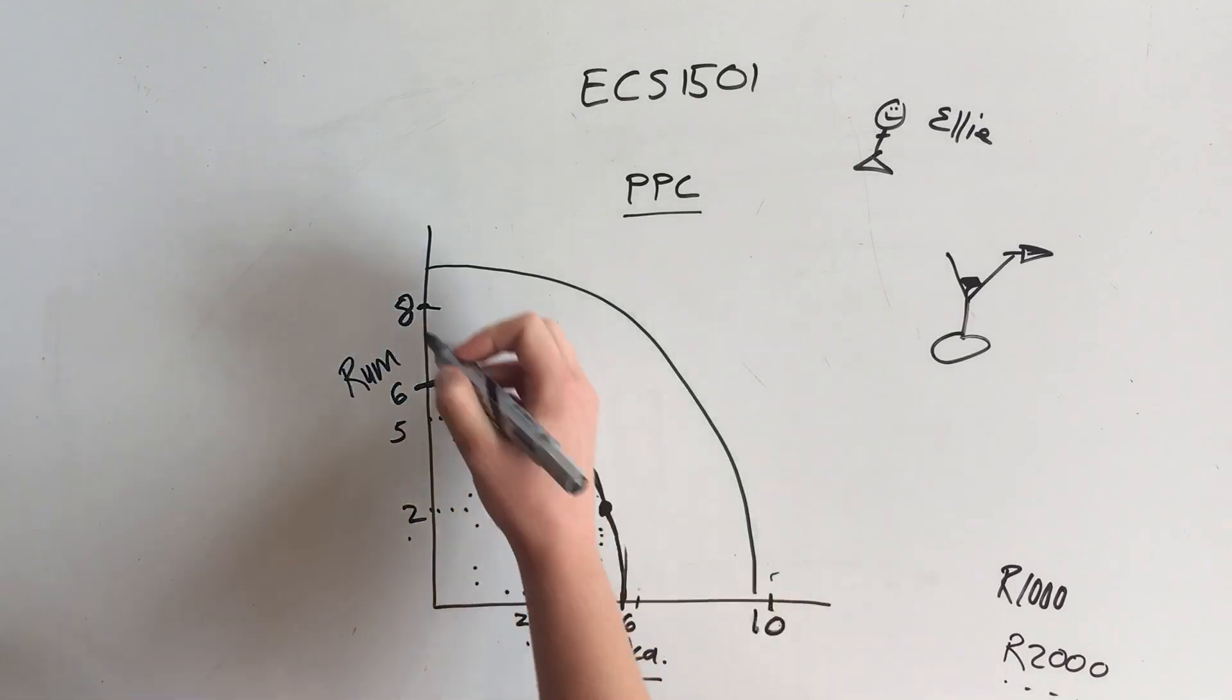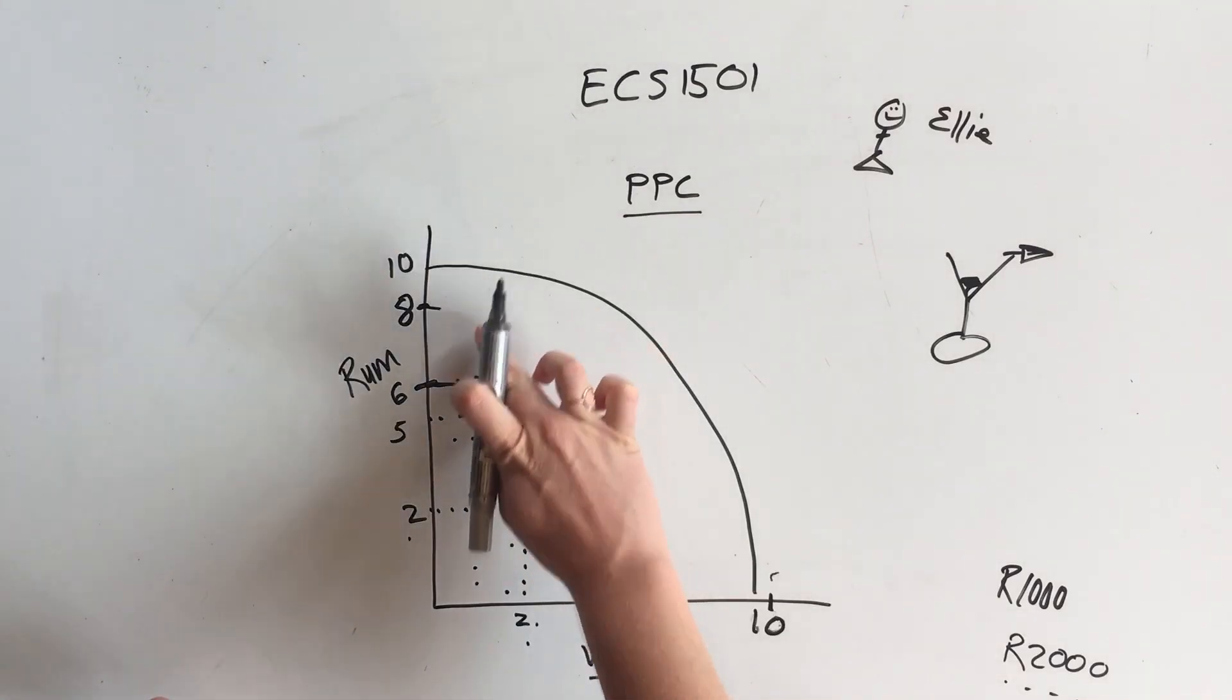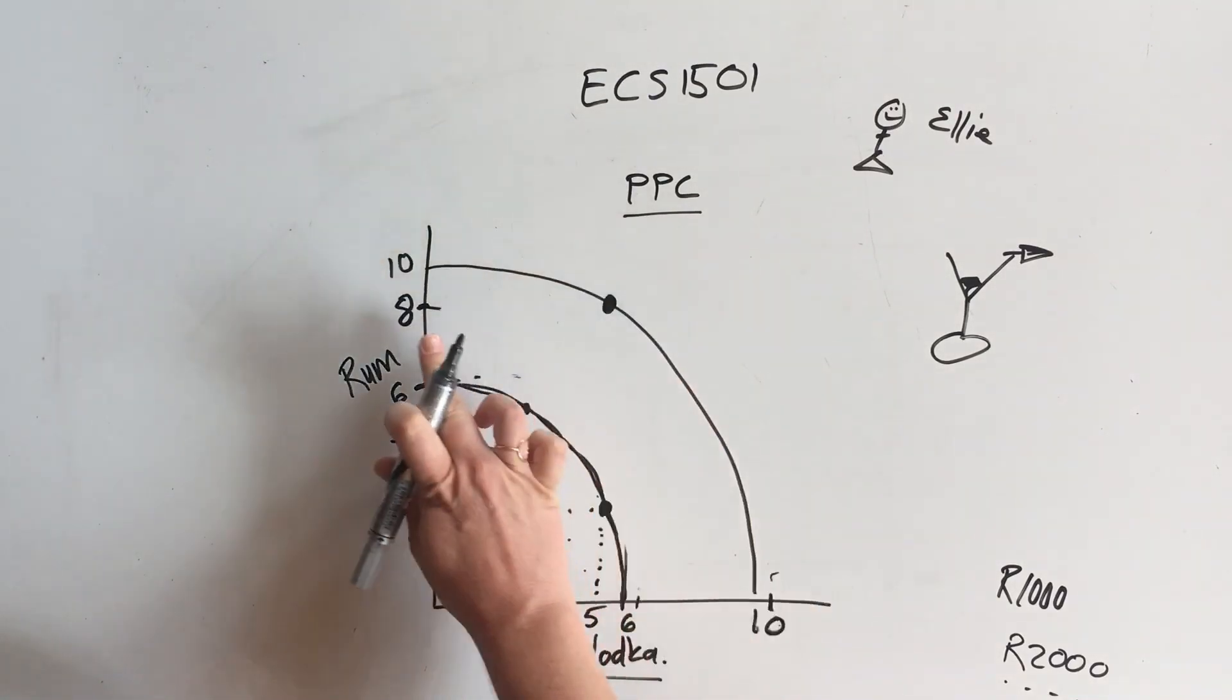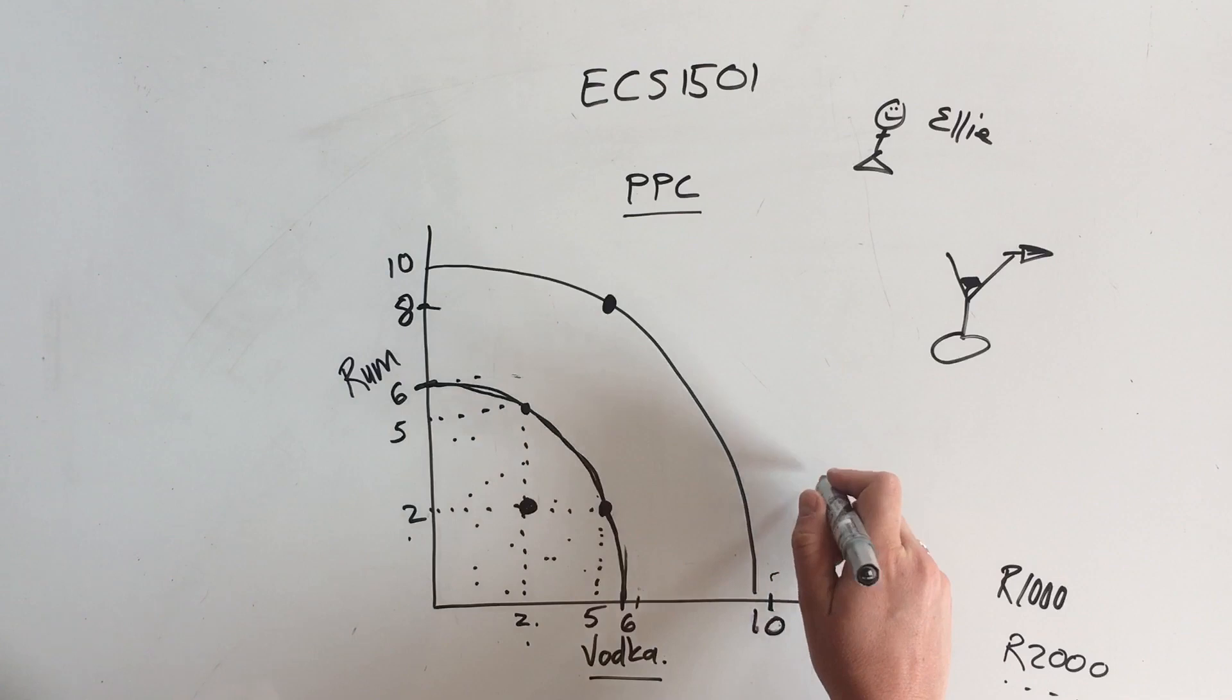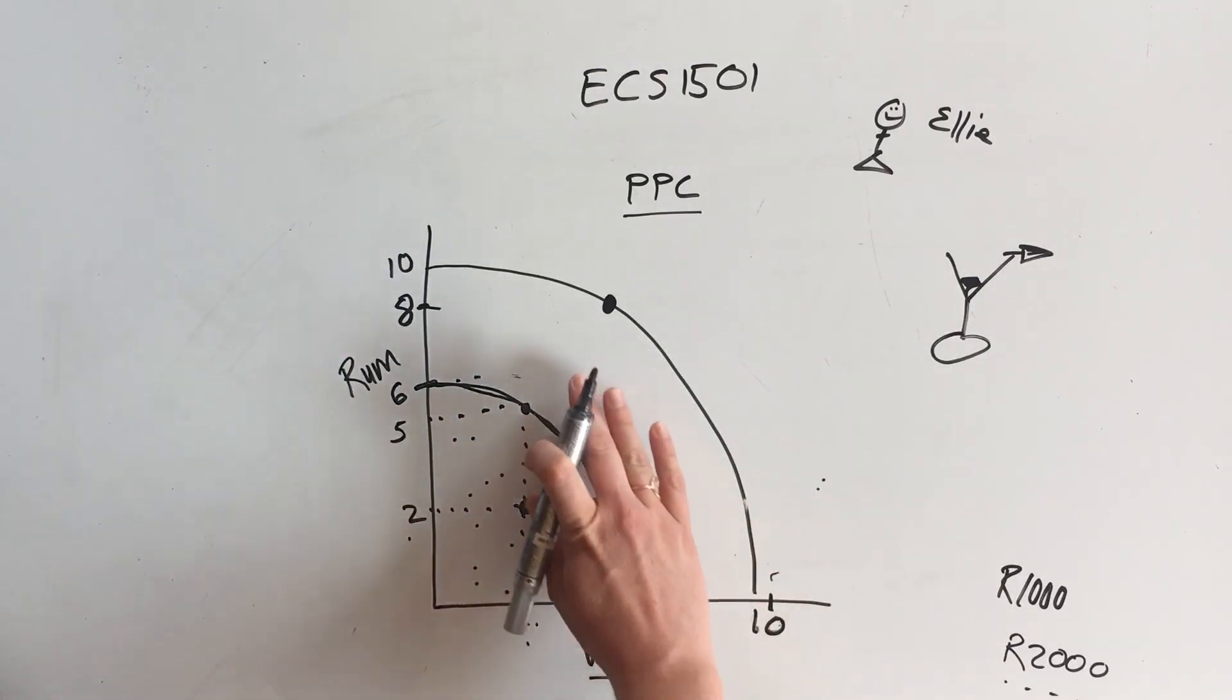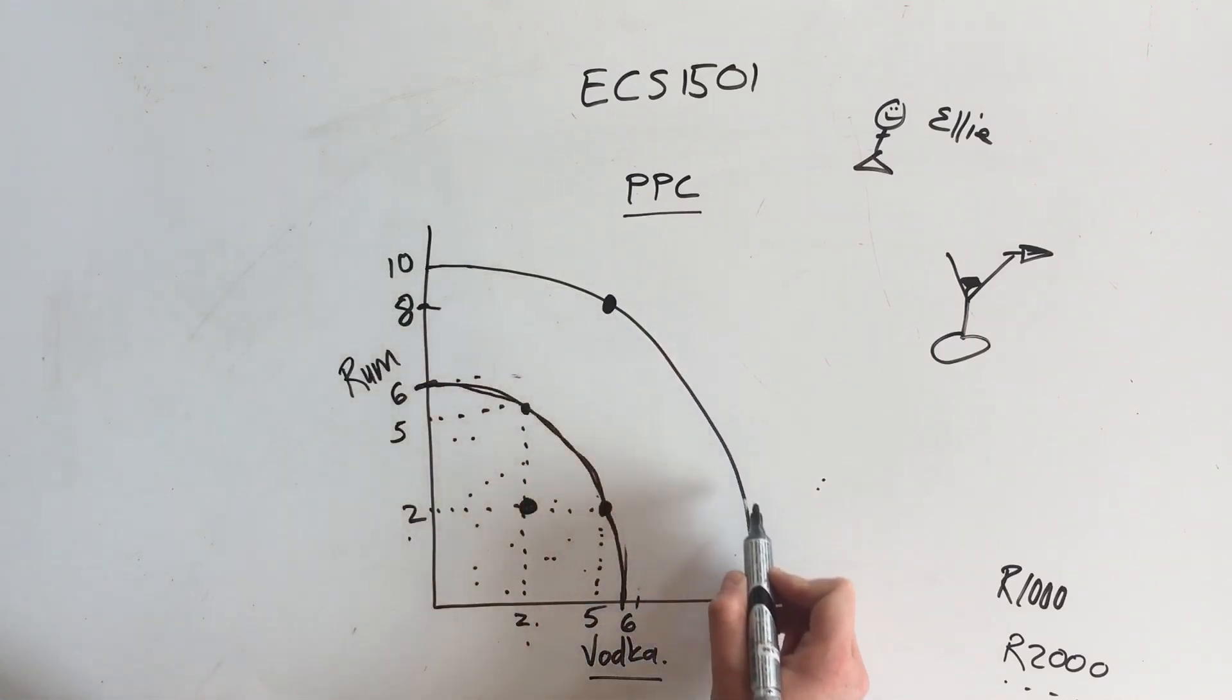This means that we cannot choose anywhere inside this curve. For example, if we take the dot over there, eight and six, outside of this line now becomes impossible, inside of this line becomes possible but not optimum, and on this line that is the most efficient possibility that we have.